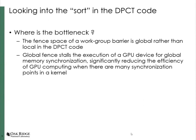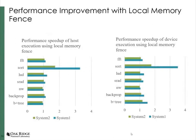An OpenCL developer knows that a barrier only needs to be local in the local memory space. In total, 11 of 18 applications contain memory synchronization in their kernels. After optimizing these kernels with local memory fences, we reevaluate their performance and find that seven kernels see improvement in host and device execution time. Particularly, the execution time of SORT is now almost the same for HIP-CL and DPCT. For the remaining applications, there is no performance improvement, likely because memory synchronization is not on the critical path for those kernels.